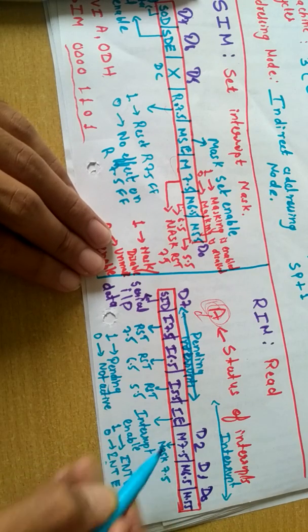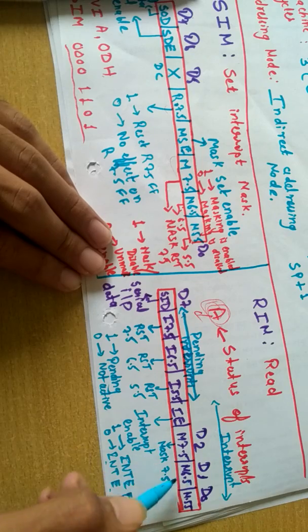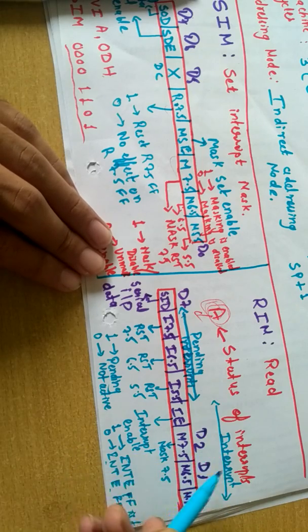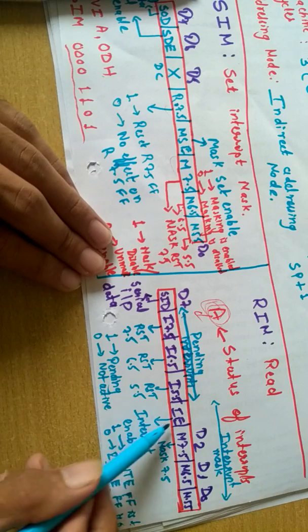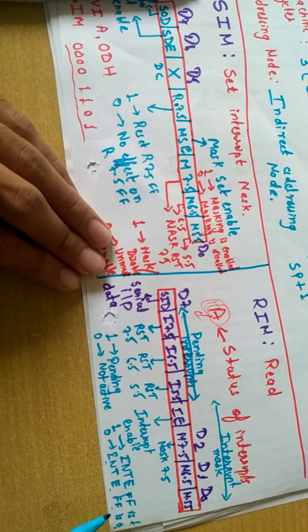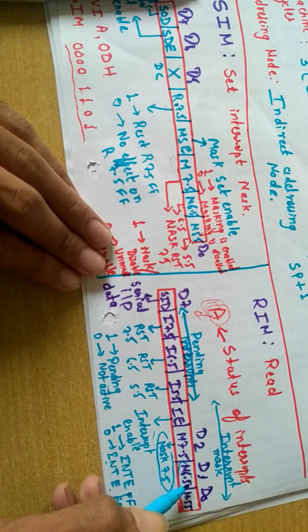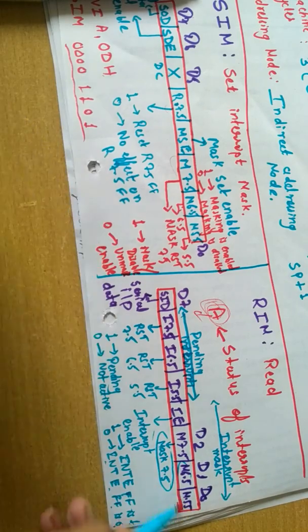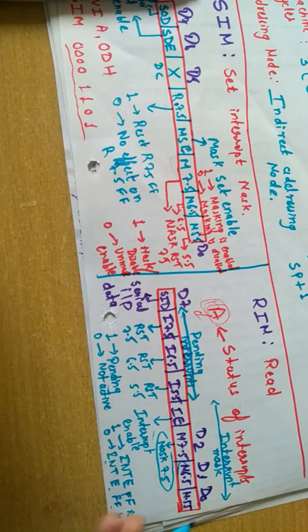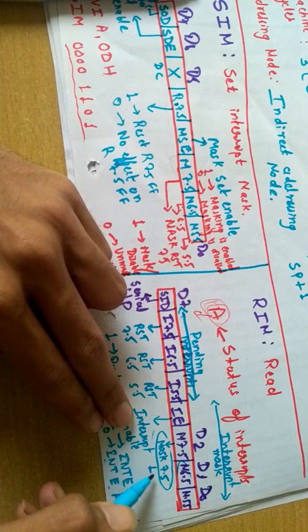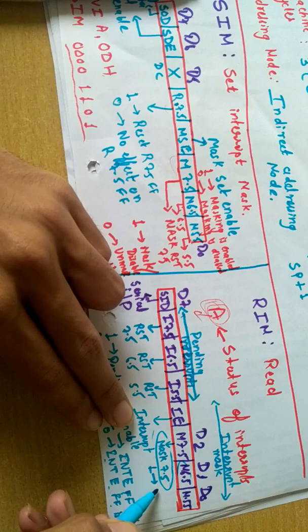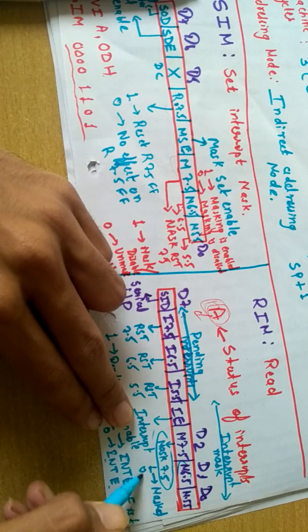Or we can say interrupt enable flip-flop is set, and interrupt enable flip-flop is reset. These 3 bits indicate the interrupt mask. This bit indicates the interrupt enable flip-flop is set or reset, and these 3 indicate the masking, whether 7.5, 6.5, and 5.5 are masked or not. If these bits are 1 then they are masked, and if it is 0 then they are unmasked.